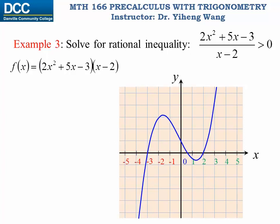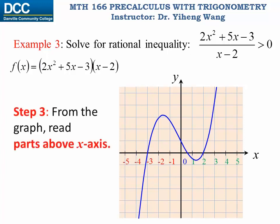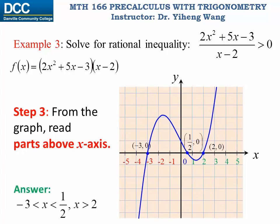Reading the intercepts from the graph, the solution to the polynomial inequality — and therefore to the rational inequality — is: x is between negative three and positive one-half, or x is greater than two.